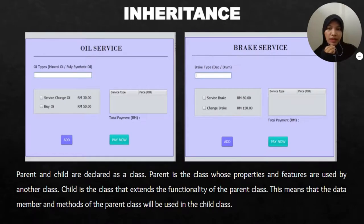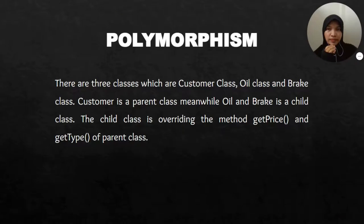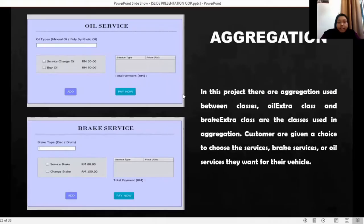Inheritance: parent and child are declared as classes. The parent is the class whose properties and features are used by another class. The child is the class that extends the functionality of the parent class, meaning the data members and methods of the parent class will be used in the child class. There are three classes: the customer class, oil class, and brake class. Customer is the parent class, while oil and brake are child classes. The child class overrides the methods get price and get type of the parent class.